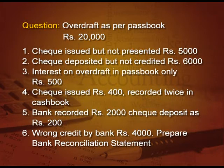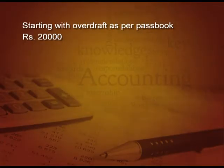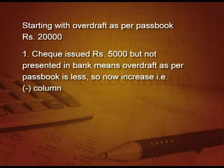In the first line, write the bank reconciliation statement with the company name and date. Starting with overdraft as per pass book 20,000, we write it in the minus column. Coming to point number 1, check issued 5,000 but not presented in the bank — that means overdraft as per pass book is less. So we will increase it, writing in the minus column.